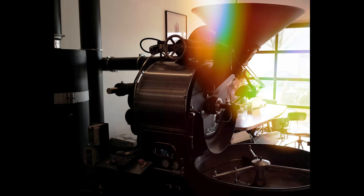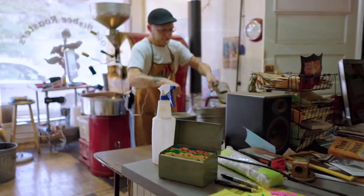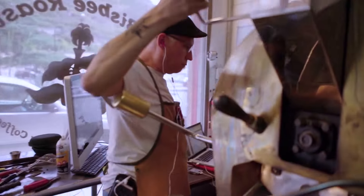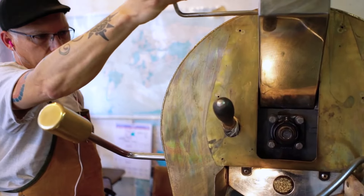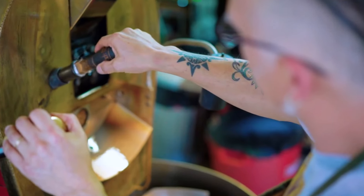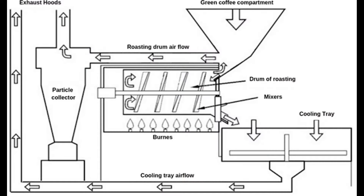It's also worth mentioning that there are some semi-commercial drum roasters that can be used in small coffee shops or for small scale roasting businesses. These roasters have a capacity between commercial and home drum roasters and are designed to meet the needs of small scale roasters who want to roast a moderate amount of coffee regularly. The rotation of the drum allows for better control of the roast development by allowing the roaster to observe the beans and make adjustments as needed.